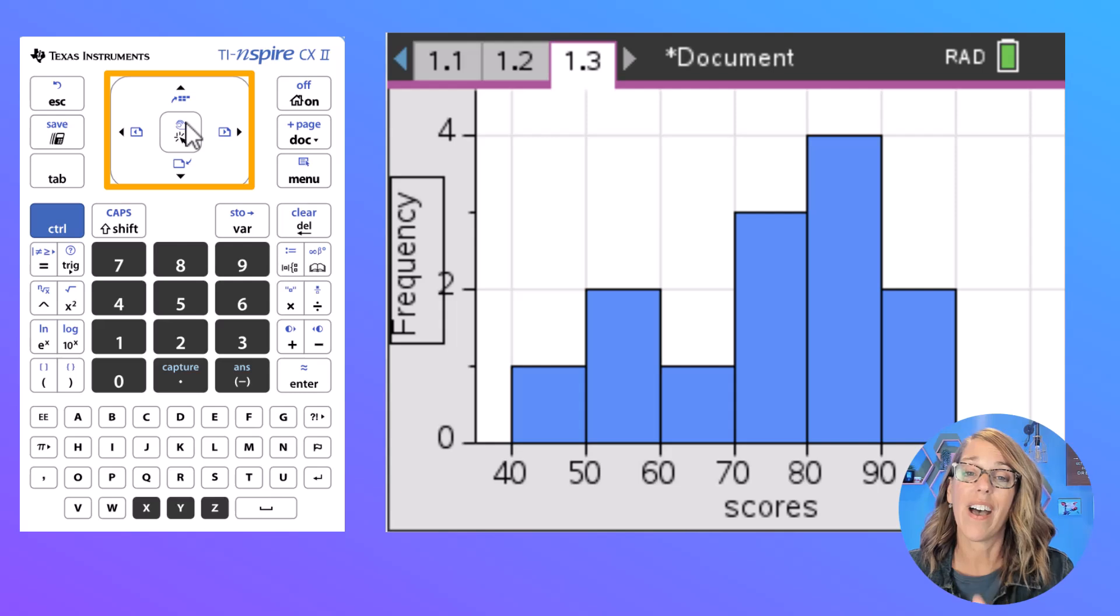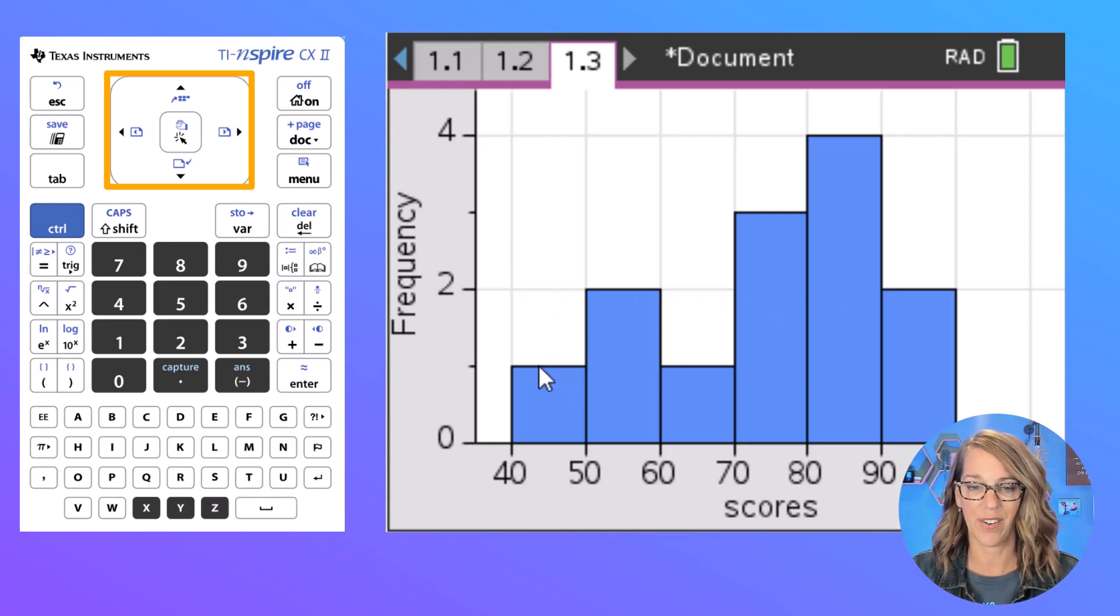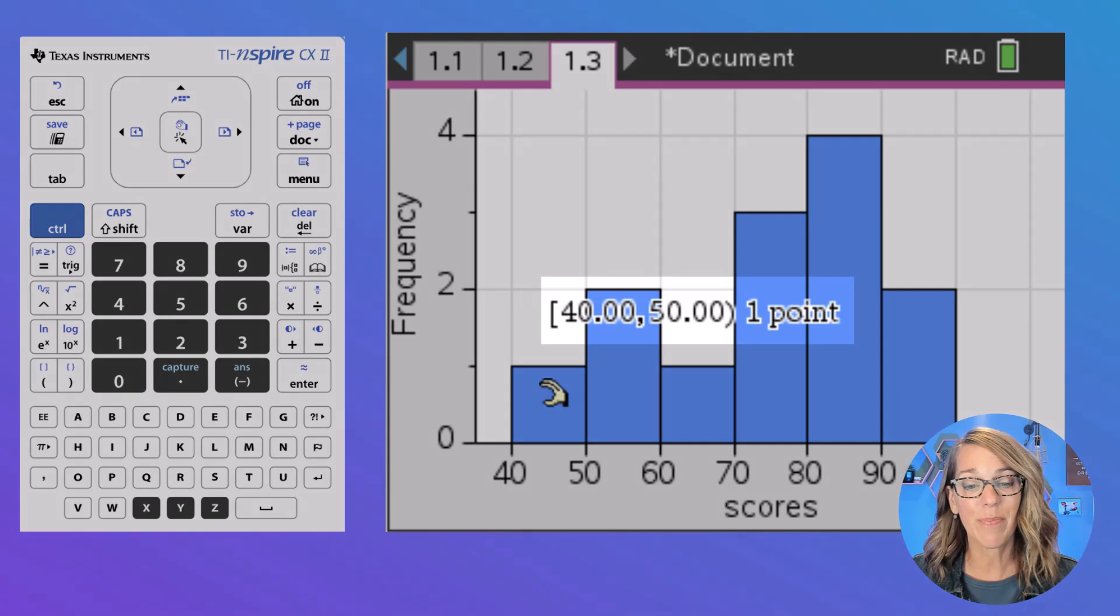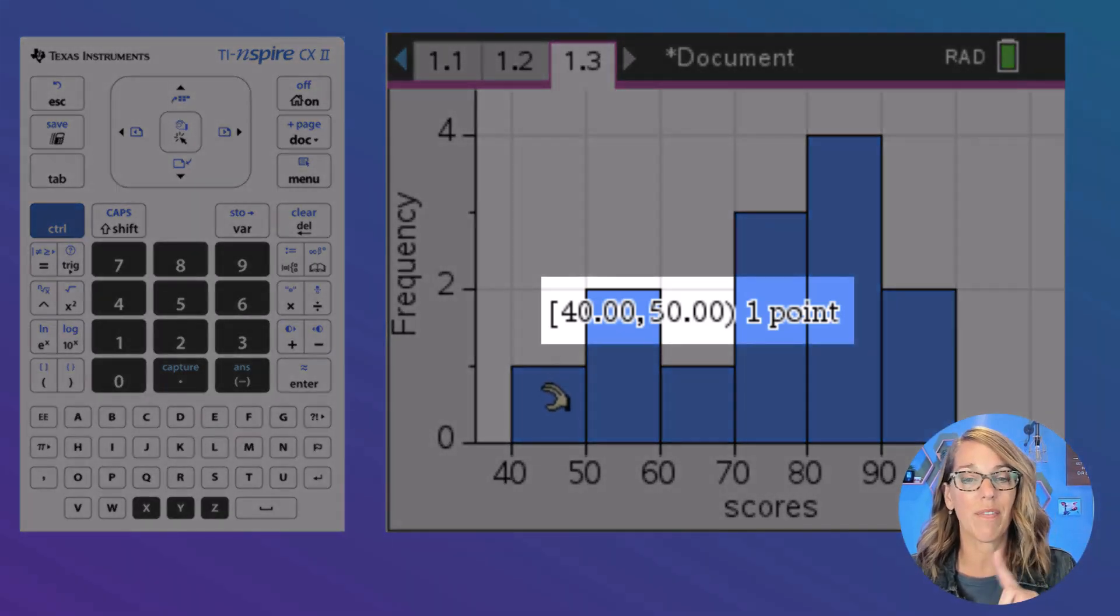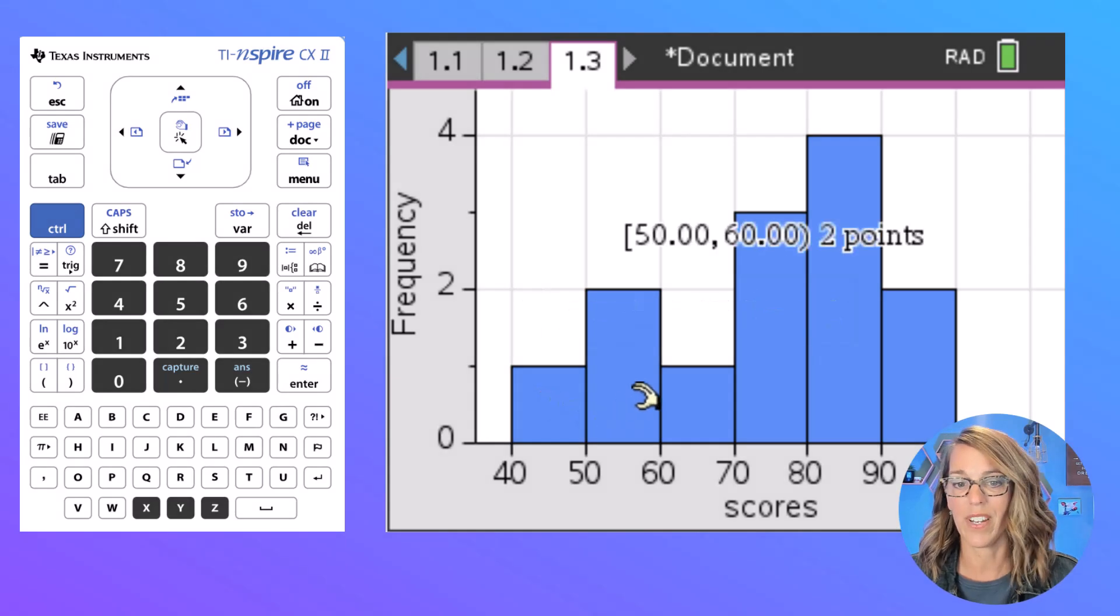If you use your touchpad you can hover over each of these. I'm going to go ahead and hover over that first one until I see how I've got that little curved hand. There's that curved hand, and it tells me that I've got one value between 40 and 50, and this is including 40—notice that square bracket—but not including 50. If I go ahead and hover over the next one, I've got two between 50 and 60, which would really be two between 50 and 59 or 59.999.